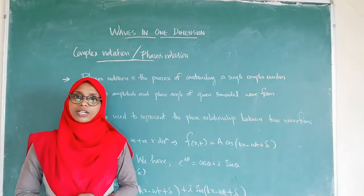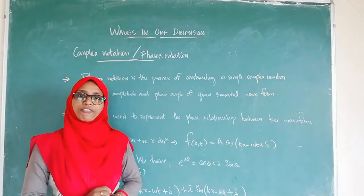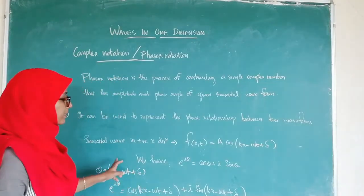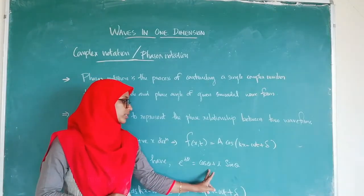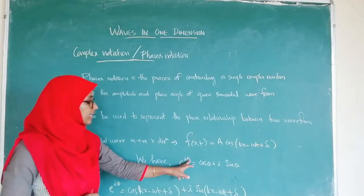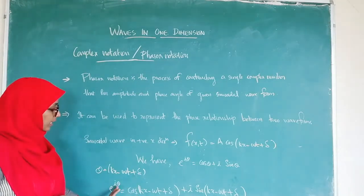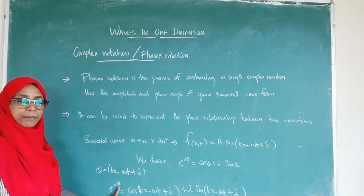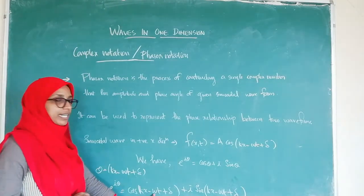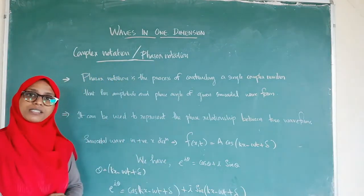We aim to represent this solution of the sinusoidal wave equation using phasor representation. We know the complex representation: e^(iθ) = cos θ + i sin θ. When θ = kx − ωt + δ, we get e^(i(kx − ωt + δ)) = cos(kx − ωt + δ) + i sin(kx − ωt + δ).